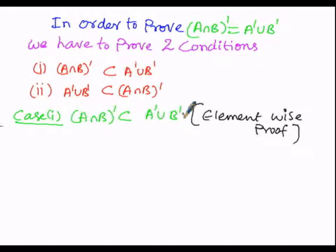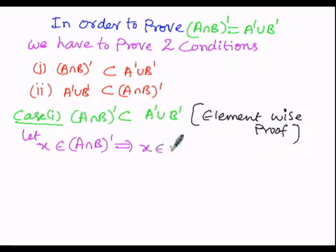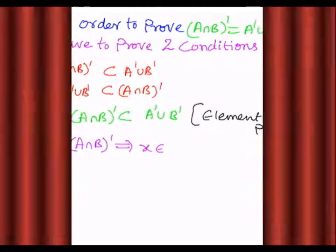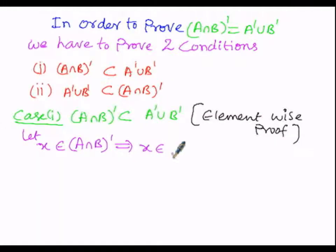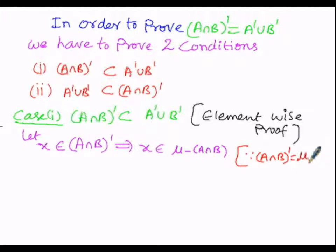To prove this, we assume an element X which belongs to the LHS, that is A intersection B whole complement. That implies X belongs to mu minus A intersection B, since A intersection B whole complement can be written as mu minus A intersection B. The next logical step: X belongs to mu, but X does not belong to A intersection B, because A intersection B is subtracted from mu.